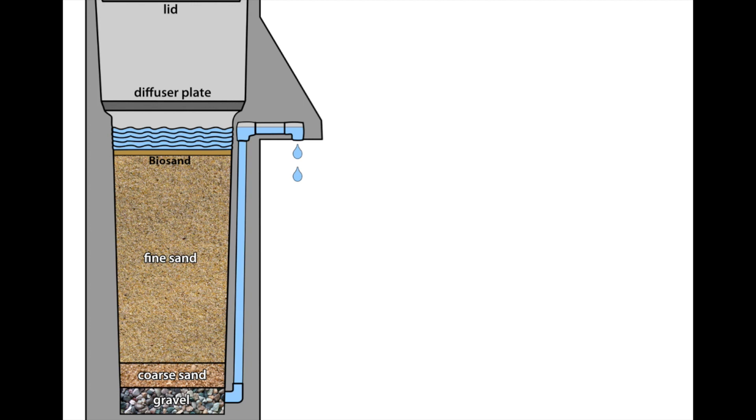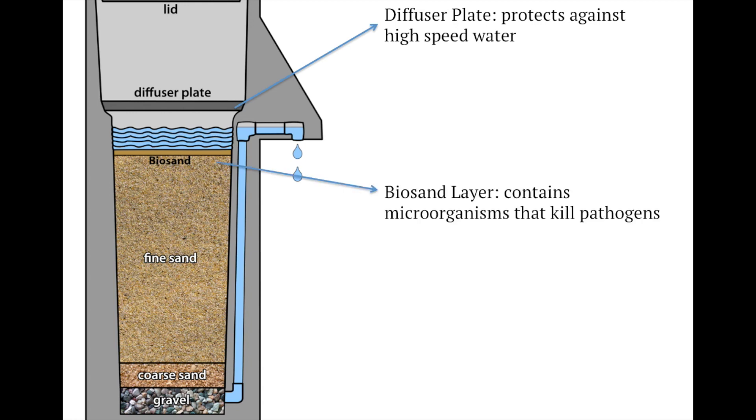During filtration, the lid must be closed to prevent dust and contamination. The water first passes into a diffuser plate that protects the biosand layer from high speed water being poured into it. This is followed by a biosand layer containing a group of beneficial microorganisms that prey on the pathogens. A layer of sand follows which has some of the microorganisms that still kill off the pathogens and filter off suspended solids.